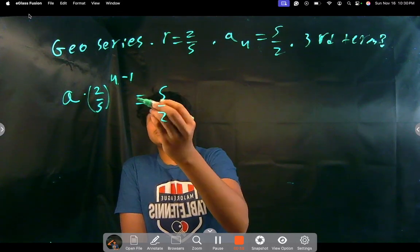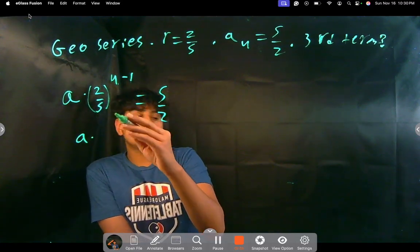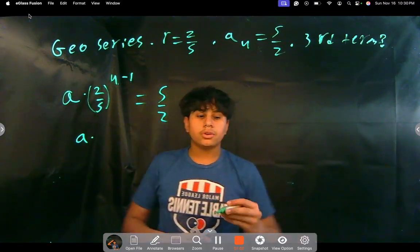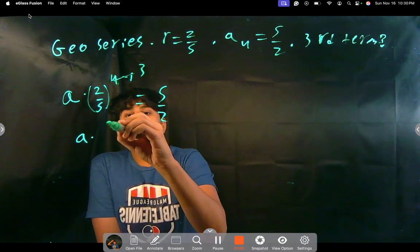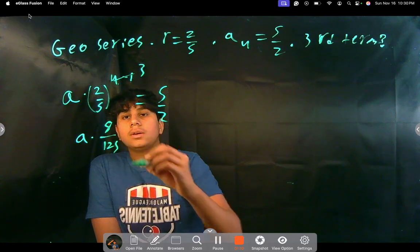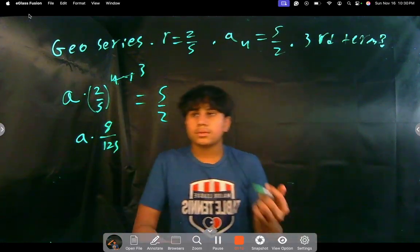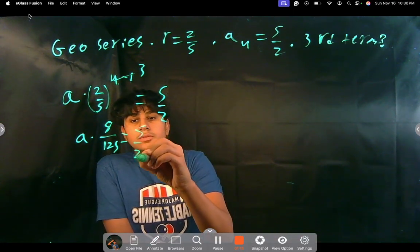So we reduce this as a times, since this is to the power of 3—4 minus 1 is 3. That's 8 over 125. 5 times 5 is 25, and 5 times 25 is 125, equals 5 halves.